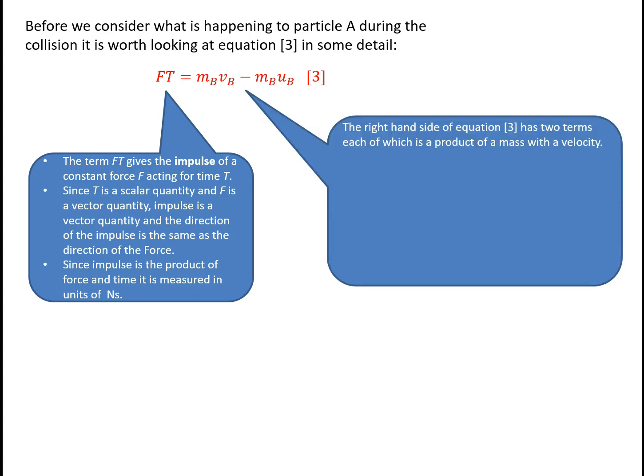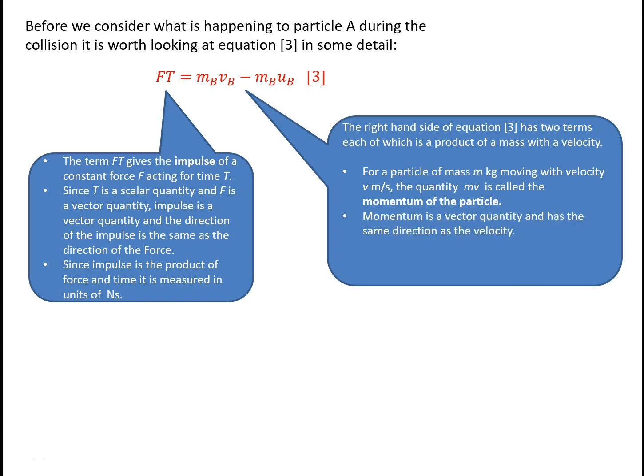The right-hand side of the equation has two terms, each of which is the mass of B times a velocity of B — the final velocity minus the initial velocity. For a particle of mass M moving with velocity V, the quantity MV is called the momentum of the particle. M is a scalar quantity, V is a vector quantity, so momentum is also a vector quantity with the same direction as the velocity. The units of momentum are kilogram meters per second.